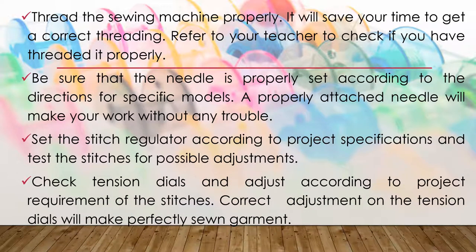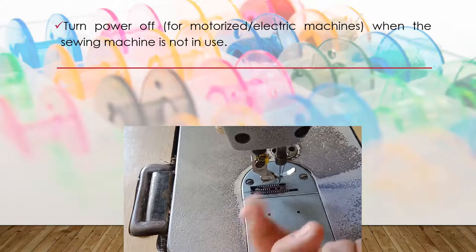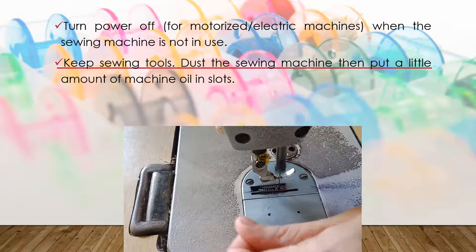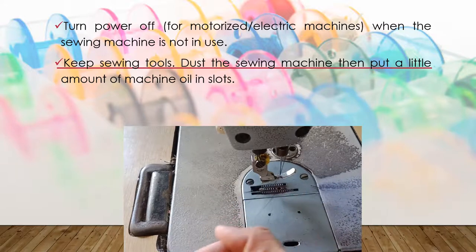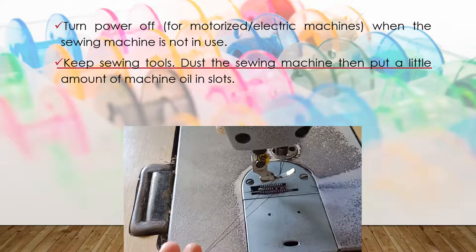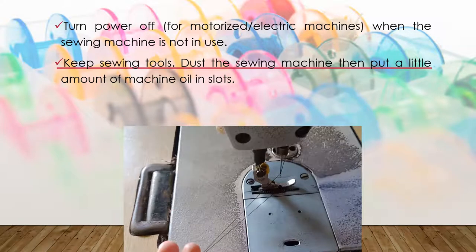Check tension dials and adjust according to project requirements. Correct adjustment on the tension dials will make perfectly sewn garments. Always check the upper and lower tension to ensure good stitches. Turn off the power to the sewing machine when it is not in use for your safety. Keep your sewing tools organized, dust the sewing machine, and apply a little amount of machine oil regularly.